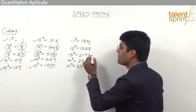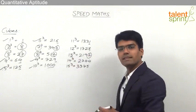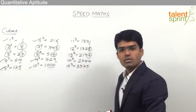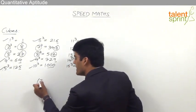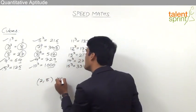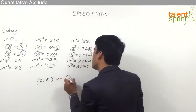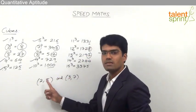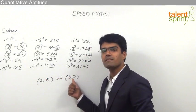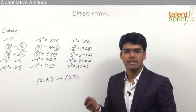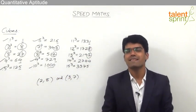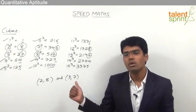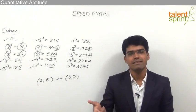So simply remember that 2 and 8, and 3 and 7, make complementary pairs. If a number ends with 2, cube root ends with 8; if it ends with 8, cube root ends with 2. Similarly, 3 gives 7 and 7 gives 3. Remaining all are the same: 1 gives 1, 4 gives 4, 5 gives 5, 6 gives 6, and 9 gives 9. Only 2, 8, 3, and 7 are interchanged.